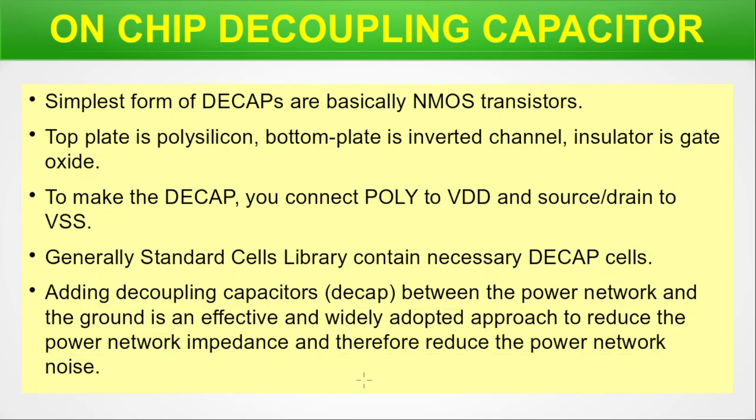Adding decoupling capacitors between the power network and the ground network is an effective and widely adopted approach to reduce power network impedance and therefore reduce power network noise. On-chip decoupling capacitor placement during VLSI design is all about reducing noise created in or coming into the chip across the full silicon stack — FUL layer, MUL layer, and BUL layer. We have a video on FUL, BUL, and MUL — the link is in the description below.